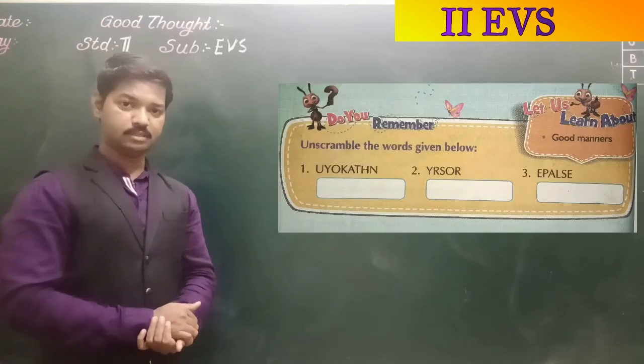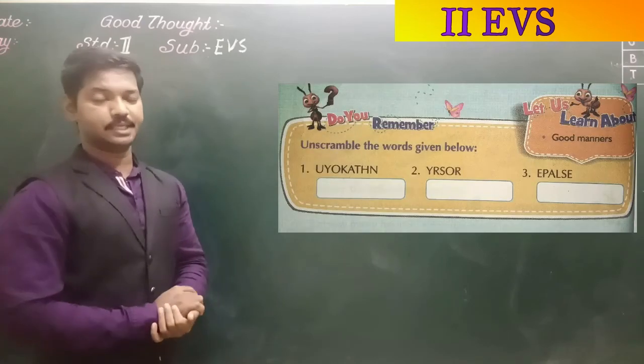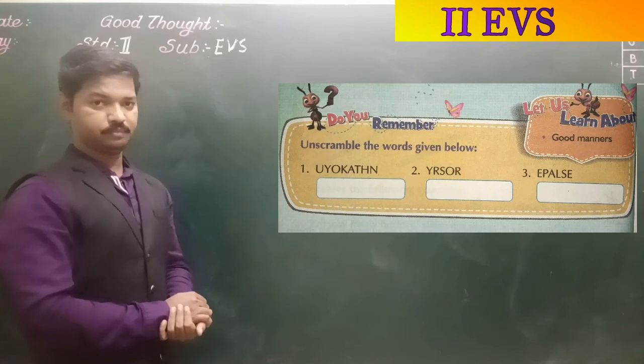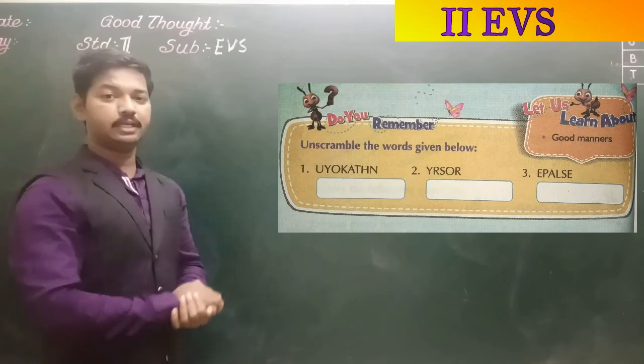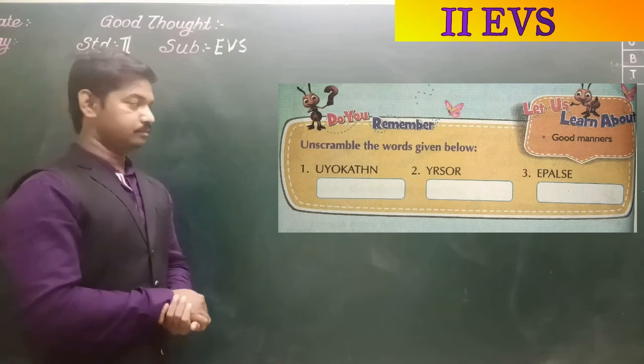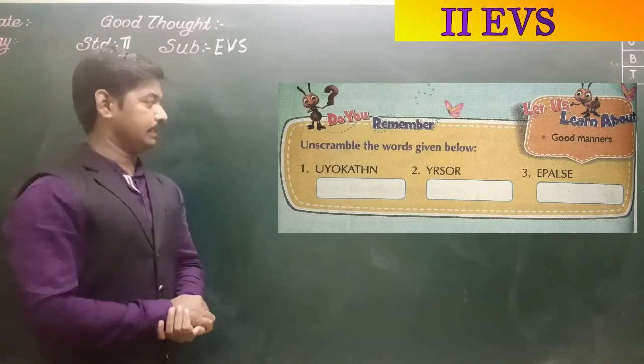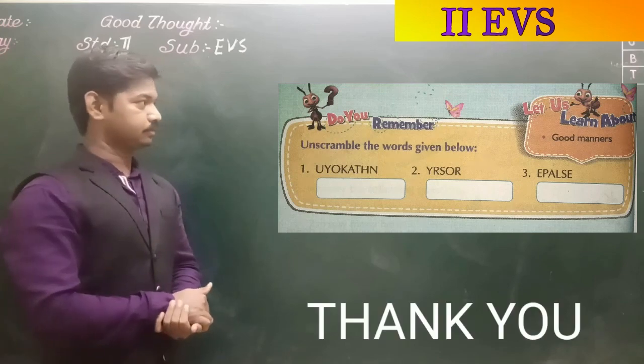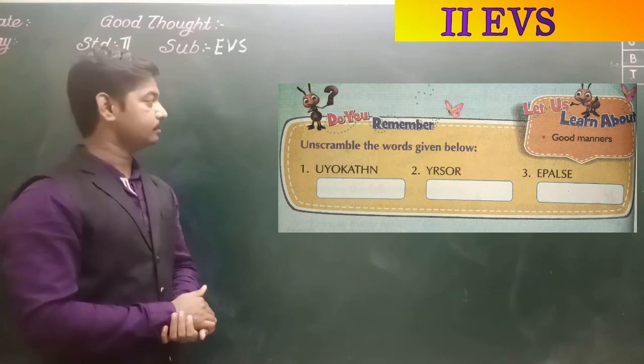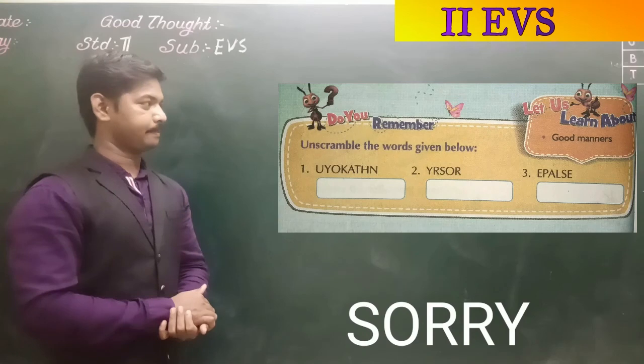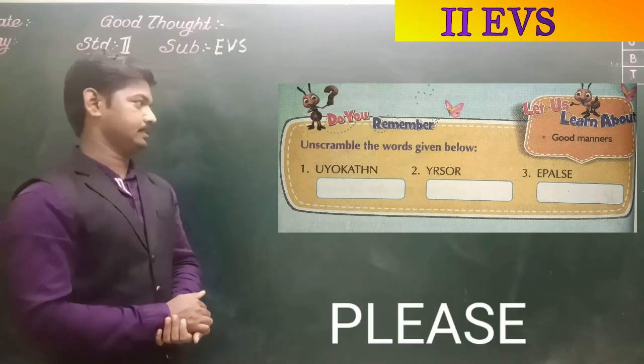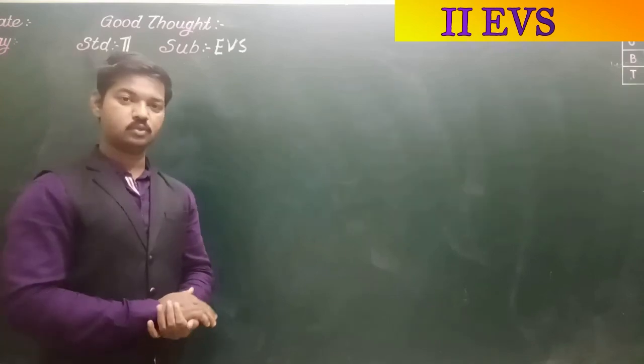Now see page number twenty-eight. One box is given there. In that box we have to unscramble the words given below. So we have to rearrange the given letters to form a meaningful word. So number one is thank you. Number two is sorry. Number three is please. Thank you.